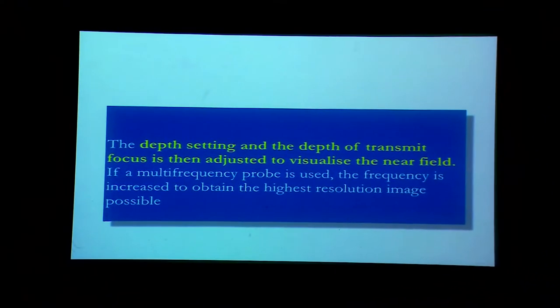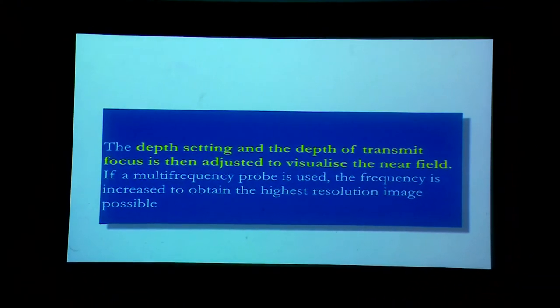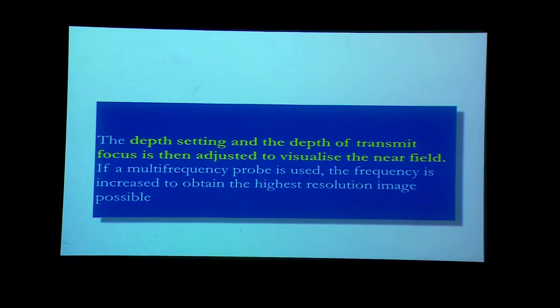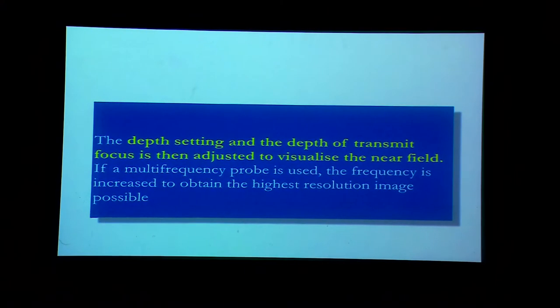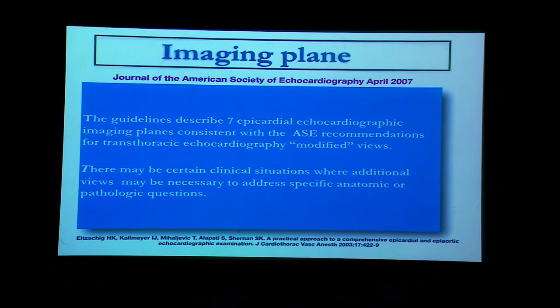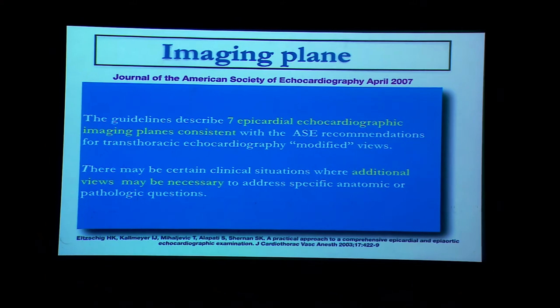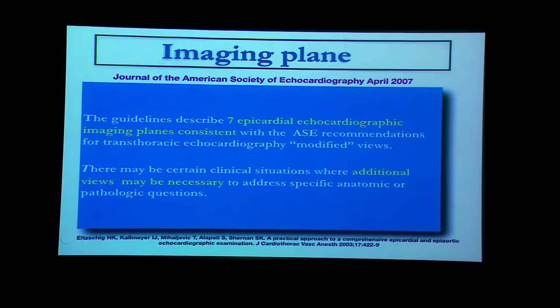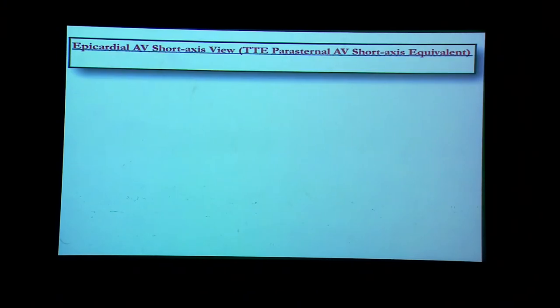We must set the depth and the transmit focus carefully because we are placing the probe directly on the heart — depth is critical for near-field imaging. The Journal of the American Society of Echocardiography has defined 7 standard epicardial images, but it is not mandatory to obtain all 7; modifications may be needed. Since in TEE we place the probe behind the heart and here we place it anteriorly, all epicardial images look like transthoracic echocardiography views.